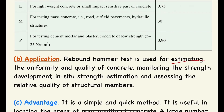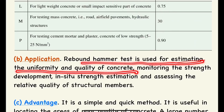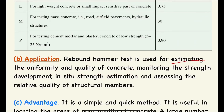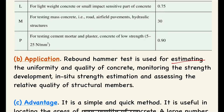The rebound hammer test is used for estimating the uniformity and quality of concrete in a structure, monitoring the strength development at seven days, 28 days, 56 days, or up to one year, in-situ strength estimation, and accessing the relative quality of structural members.